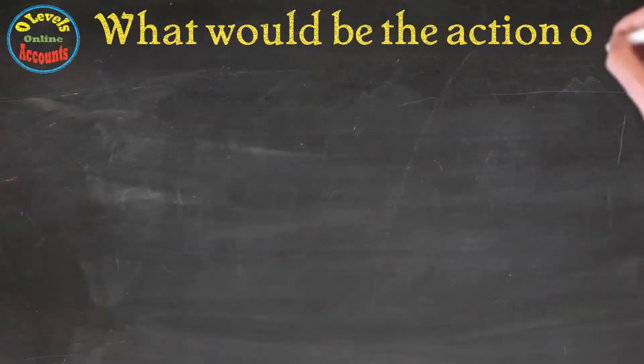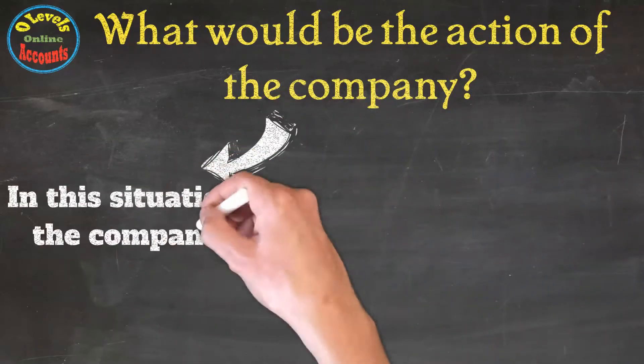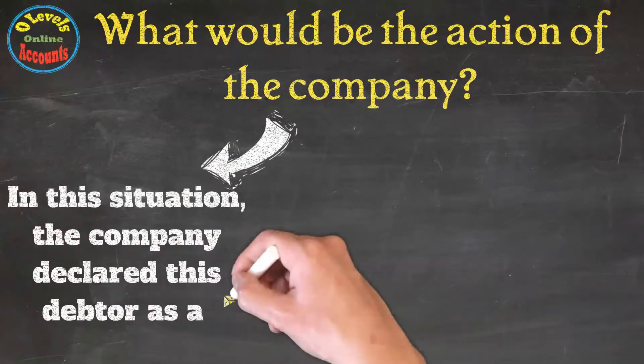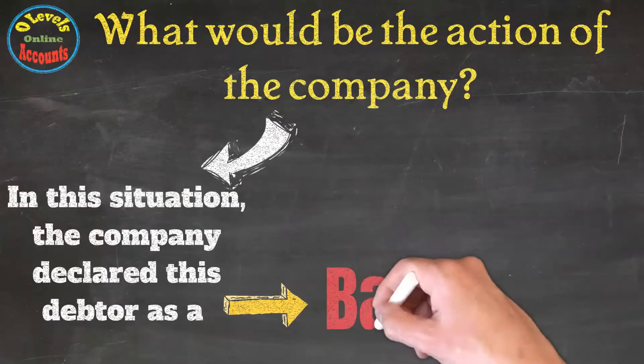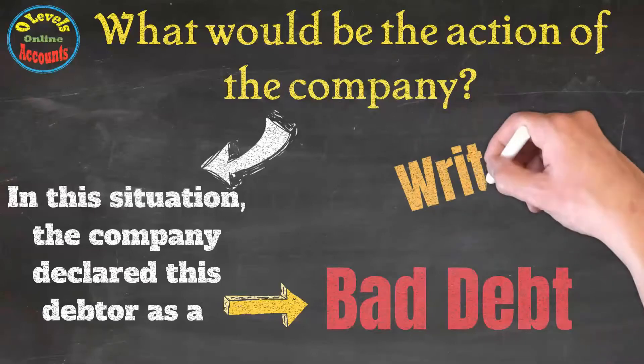What would be the action of the company in this situation? The company declares this debtor as a bad debt, and the process is called the write-off.